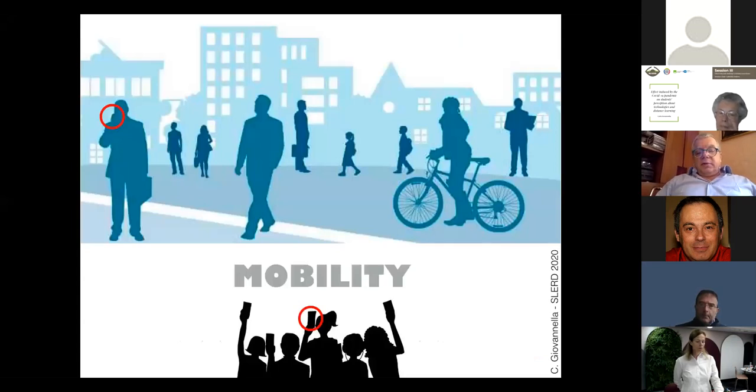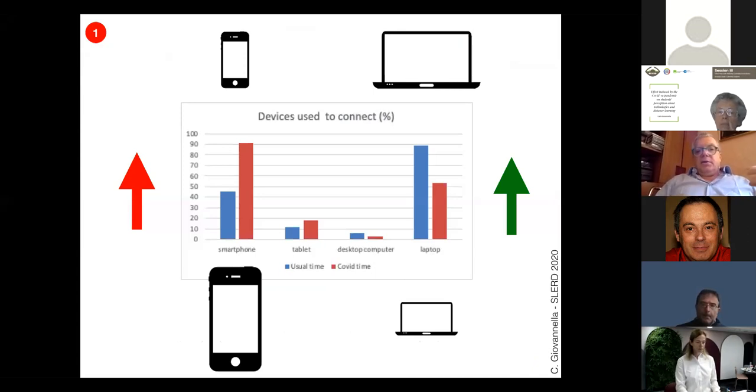One effect on the students concerns the device that they use. As you know, most of them now use a mobile phone, also because they are always in mobility. But once you are in lockdown condition, what happened is that the use of the smartphone to attend the didactical activities decreased a lot from 90 percent to 45 percent, while the use of laptops increased. This demonstrates that if you have the possibility to stay somewhere and if you are asked to produce a report or project, the only way is to use a laptop. This is a very interesting result.